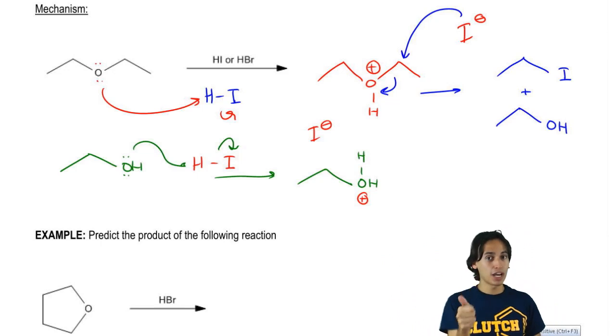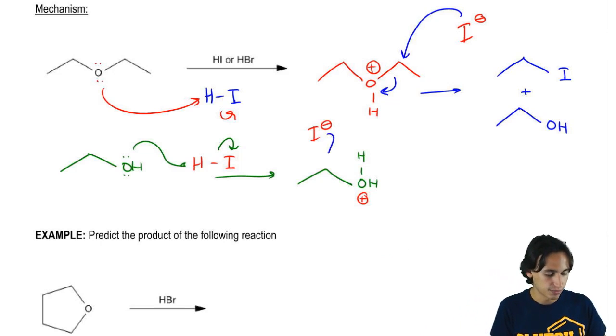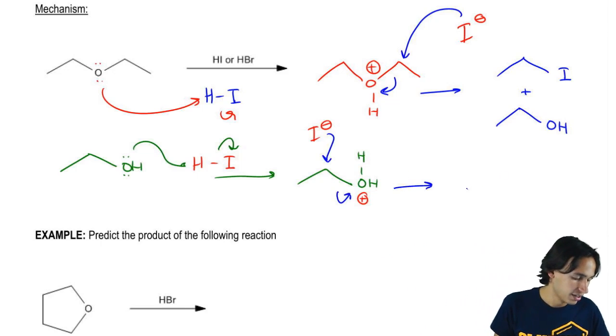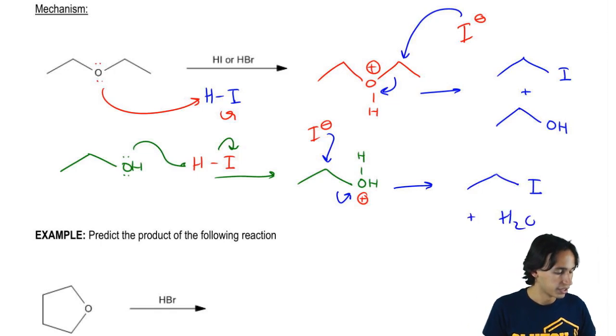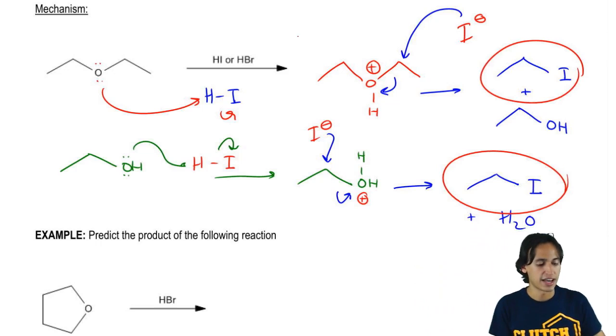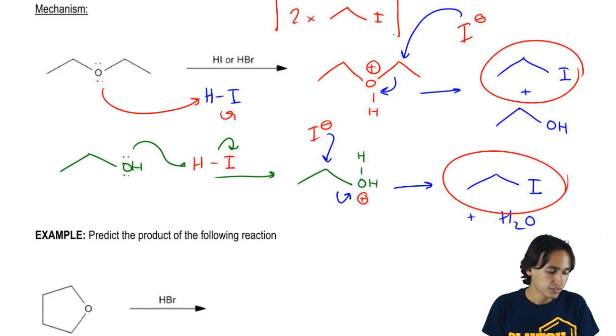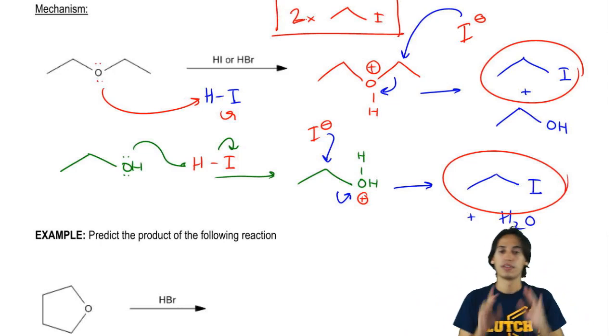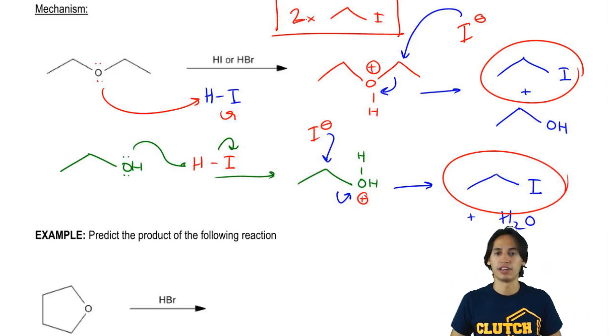Since it's a primary alcohol, it should be an SN2 mechanism. So I would do a backside attack once again. And what I'm going to wind up getting at the very end is I'm going to get another equivalent of alkyl iodide plus water. So what this is going to create at the end is not one, but two equivalents of the same alkyl halide. So the answer for this question is that what I should put is two times that. That is my actual answer because I'm splitting up the ether into two different sections, I'm cleaving it and I'm getting alkyl halides as a result.